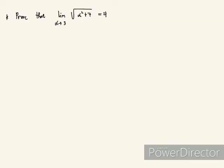The first question is: prove that the limit of the square root of alpha squared plus 7 as alpha approaches 3 is 4. So how do we show that? We will start by introducing our epsilon to be greater than 0.